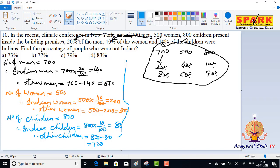Other men: 560, other women: 300, other children: 720. So now we need to find the percentage of people who are not Indians. The number of people who are not Indians is equal to 560 plus 300 plus 720. That is 560, 300 makes 860, 860 plus 720 equals 1580.